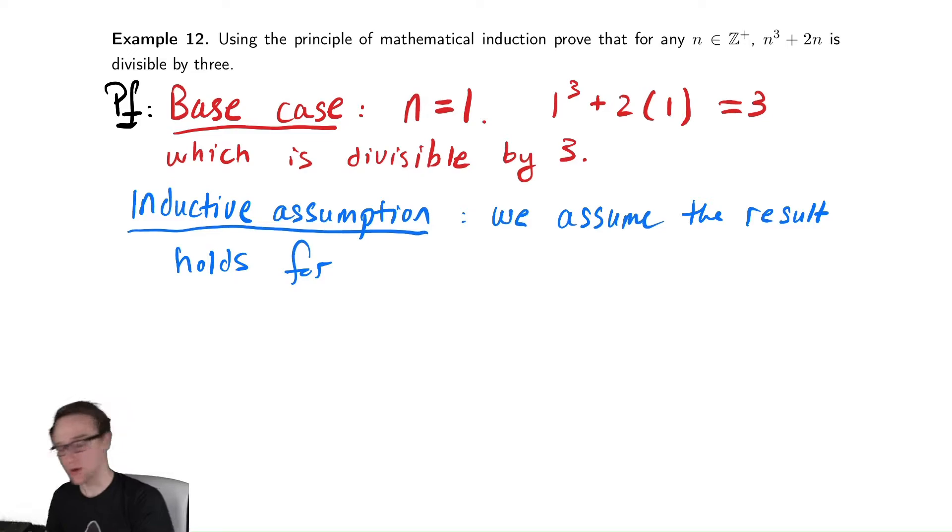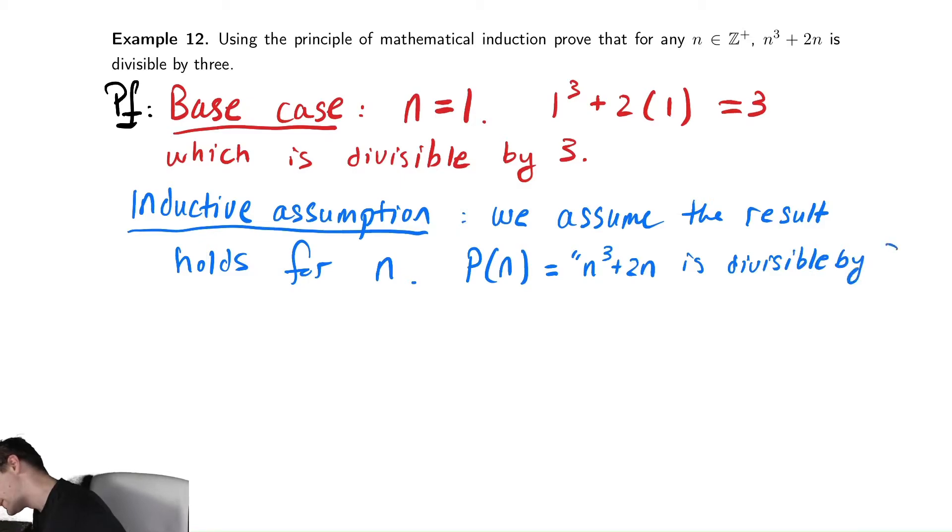That is that P(n) is true, which is that n cubed plus 2n is divisible by 3. We'll come back to how to express that mathematically later, but for now we'll just write it in English.